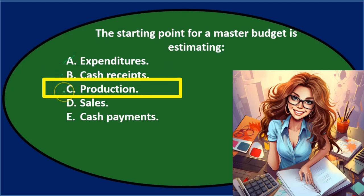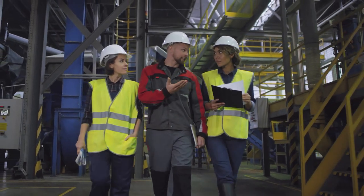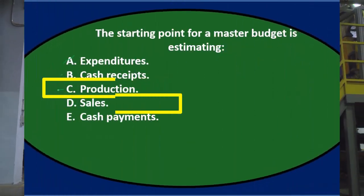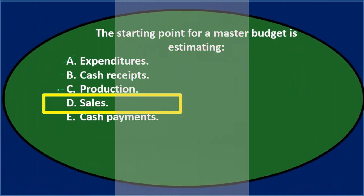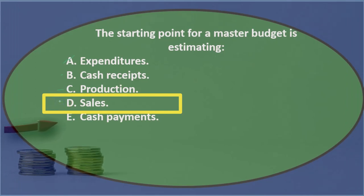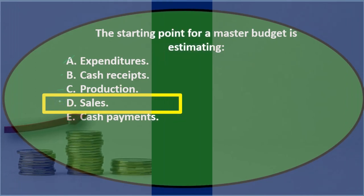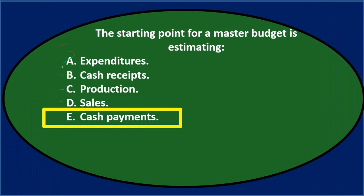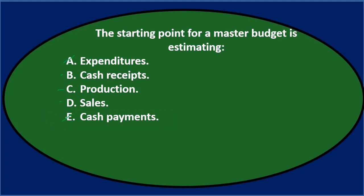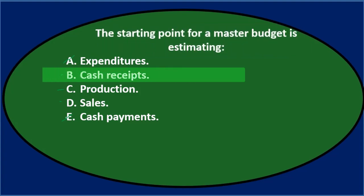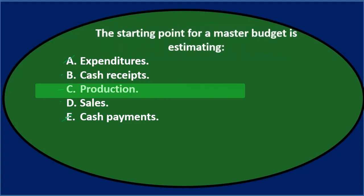C says production — we need to know how much we produce, that's somewhere towards the top, so I'll keep it for now. D says sales, and that's the top of the income statement — you would think that sales, like revenue, would be somewhere up there. And E says cash payments, which is kind of like expenditures — we'd need receipts first before considering how to budget expenditures. So I'm going to eliminate that one. We'll keep B, C, and D. The starting point for a master budget is estimating either B, cash receipts, C, production, or D, sales.